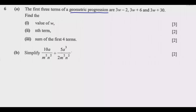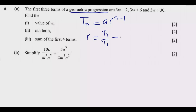Part (a) has seven marks. To find the value of w, we use the principle that the nth term of a geometric progression is given by a multiplied by r to the power (n − 1). The common ratio r is the ratio of successive terms, so r equals t2 over t1, which must equal t3 over t2. We have t1, t2, and t3, so we use this ratio to find r and form an equation to find w.